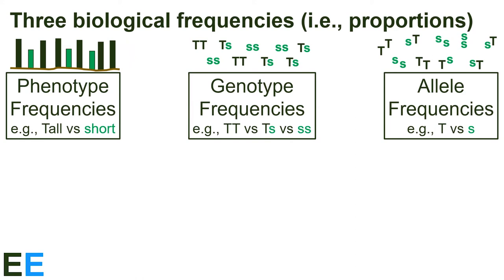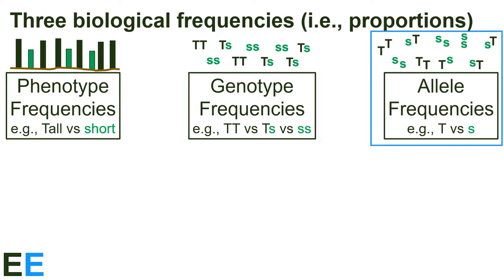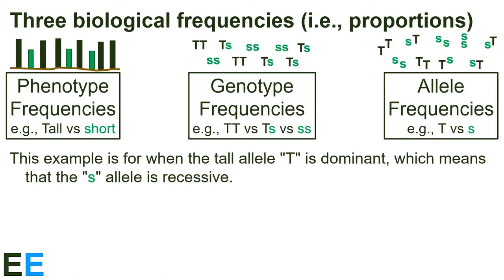Let's look at these three frequencies in more detail. Consider a set of individuals with two phenotypes, tall and short, as shown on the left. Each individual has one of three genotypes: TT, Ts, and ss, as shown in the center. Or we could ignore the individuals and just think about the two alleles segregating within the population, as shown on the right. This example is for when the tall allele T is dominant, which means the s allele is recessive.